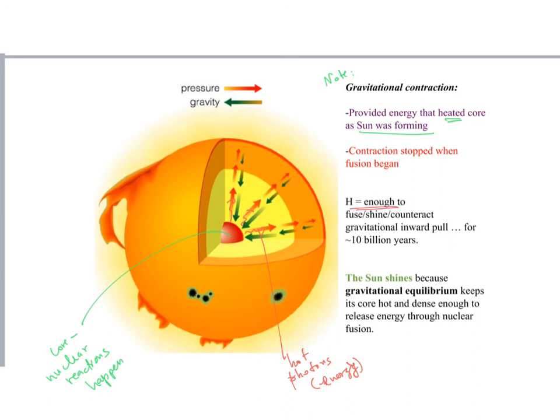Now, it's enough hydrogen in the core for that reaction of hydrogen to helium. Actually, four of the hydrogen nuclei go into helium to fuse and shine. So that's the fusion reaction, to fuse and shine, therefore create those hot photons and counteract the gravitational inward pull for about 10 billion years. Again, we're not going to go through those calculations, but the important thing is that there is a so-called gravitational equilibrium that keeps its core hot and dense enough to release energy through nuclear fusion, again, for about 10 billion years.